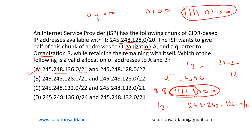So as a result, option A is the correct answer here. We are performing our operation with 128. Note that 128 in binary is 10000000, and when we perform the AND operation, we will get 128.0. So the correct answer is option A.